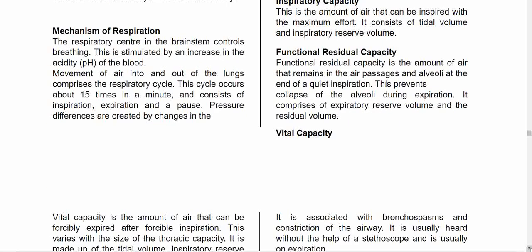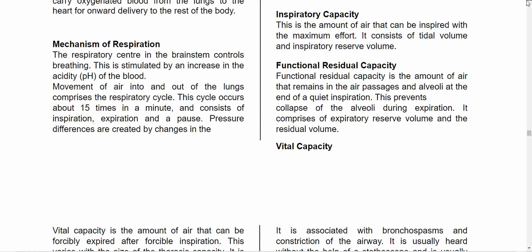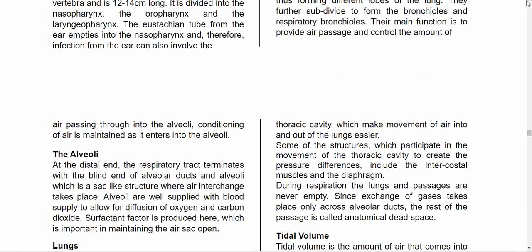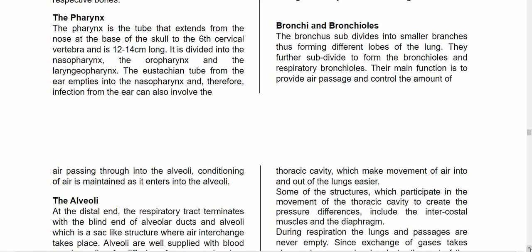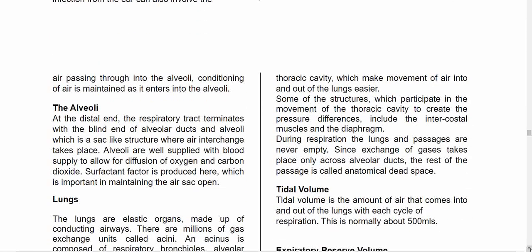Regarding the mechanism of respiration: the respiratory center in the brainstem controls breathing and is stimulated by an increase in the acidity of the blood — the pH. Movement of air into and out of the lungs comprises the respiratory cycle, which occurs about 15 times per minute and consists of inspiration, expiration, and pause. Pressure differences are created by these changes. Structures involved in movement of the thoracic cavity to create pressure differences include the intercostal muscles and the diaphragm. During respiration, the lungs and passages are never empty. Since gas exchange takes place only across the alveoli, the rest of the passage is called anatomically dead space.